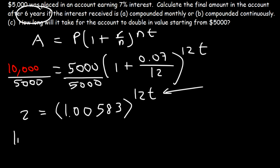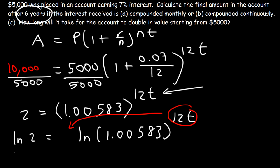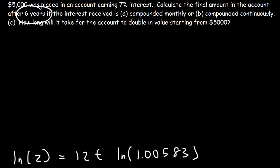Now anytime you want to solve for a variable that is in the exponent position, take the natural log of both sides. You can use a regular log as well. Once you take the natural log of both sides, you can move the exponent, in this case the 12T, to the front. And so the natural log of 2 is equal to 12T times the natural log of 1.00583. So now at this point, we just need to do some algebra and then we can get the answer. So let's divide both sides by 12 and ln of that number. So ln 2 divided by 12 times the natural log of 1.00583. That should equal T.